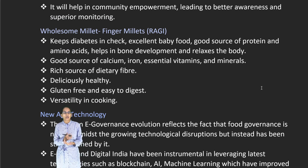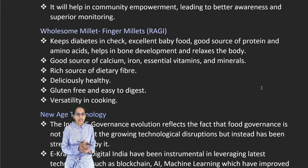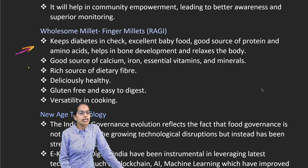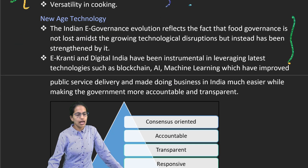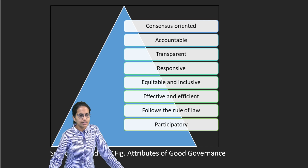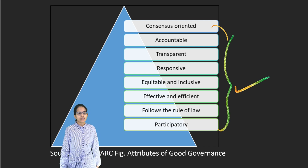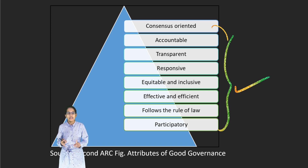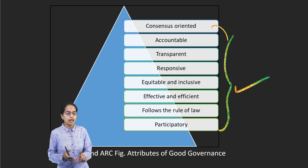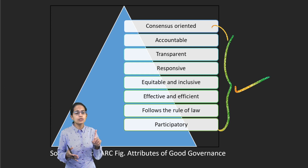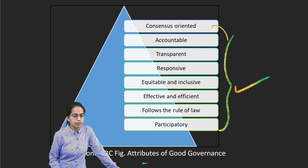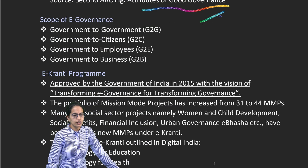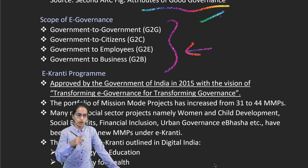The next is finger millet or ragi. Ragi is an excellent source of calcium and iron, helps in diabetes, is rich in dietary fiber, gluten-free and easy to digest. New-age technology talks about machine learning and blockchain, and for e-governance what we focus on is smart governance — accountability, transparency, responsiveness, equity, equitable and inclusive growth, following the rules and being a participatory government — which are some of the basic attributes of good governance.